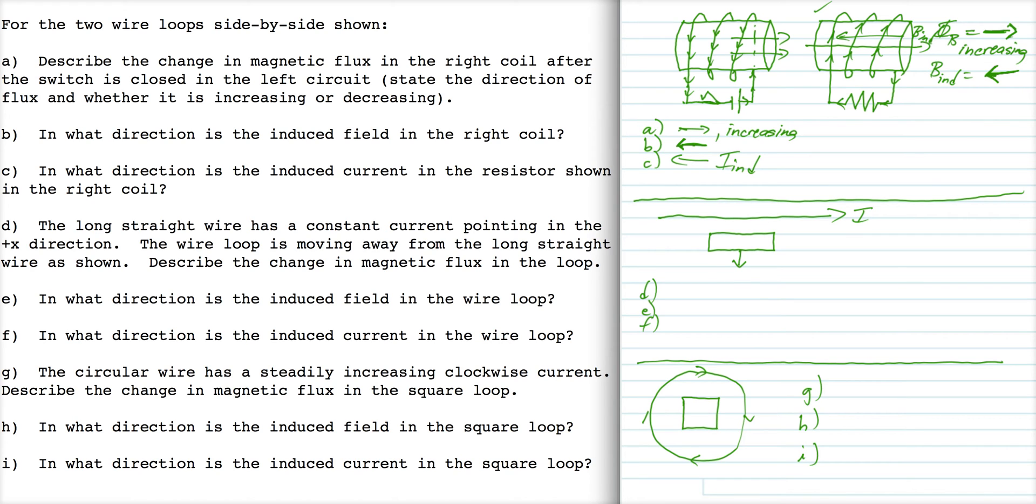For the second condition, we have a constant current, but then this rectangular wire loop is moving away. According to the right-hand rule, this loop is going to be embedded in an external field that points into the page.